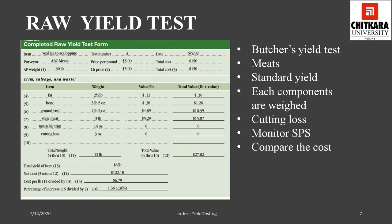Details recorded in the raw yield test form include item name, price per pound, supplier name, total cost, as-purchased weight, and the weight of usable as well as non-usable parts such as fat, bone, and cutting loss. The individual parts are then turned into a monetary value by multiplying their weight with the market price of each item, giving the value of usable as well as non-usable parts. Finally, the net cost is calculated by subtracting the total cost by the value of non-usable parts, and the actual cost per pound is achieved by dividing the net cost by the total yield obtained.